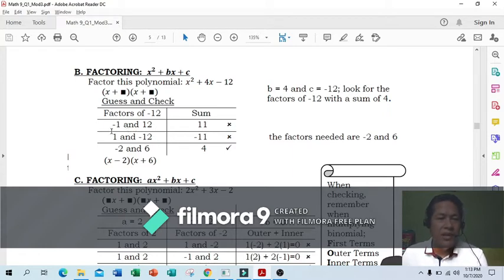Find factors of negative 12: negative 1 and 12 gives 11; 1 and negative 12 gives negative 11; negative 2 and 6, add them: negative 2 plus 6 equals 4. So negative 2 and 6 go in the box. The factors needed are negative 2 and 6.